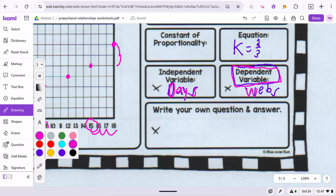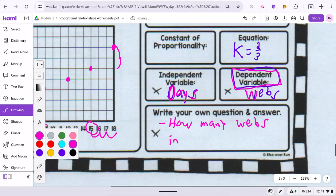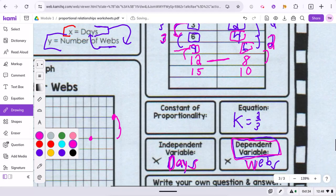So for down here, you can write any question related to this. You can say something like, how many webs in, up here, it goes up to 18.